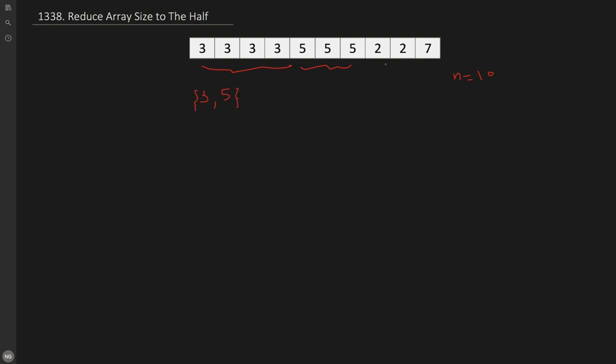After removing 3 and 5, only 2, 7 are left, which is 3 elements — less than or equal to half the size. Half of 10 is 5, so yes, this is one valid answer. We need to return the size of our selected set, which is 2.